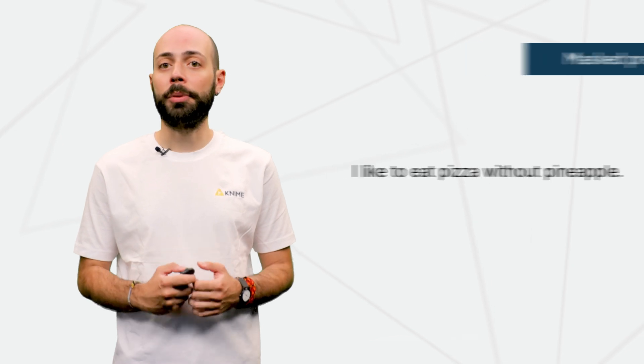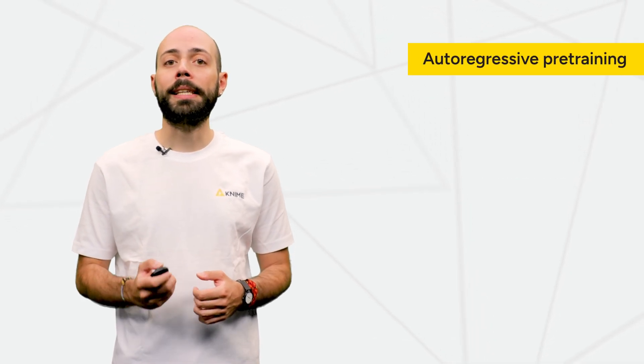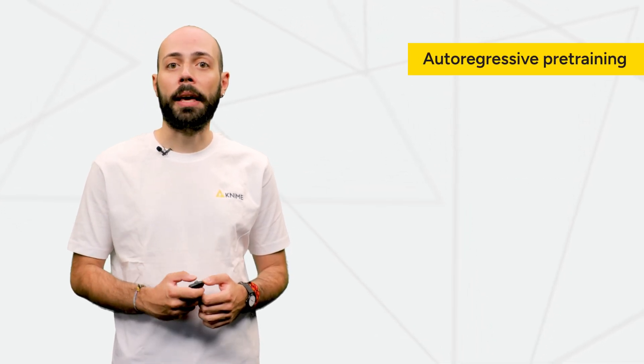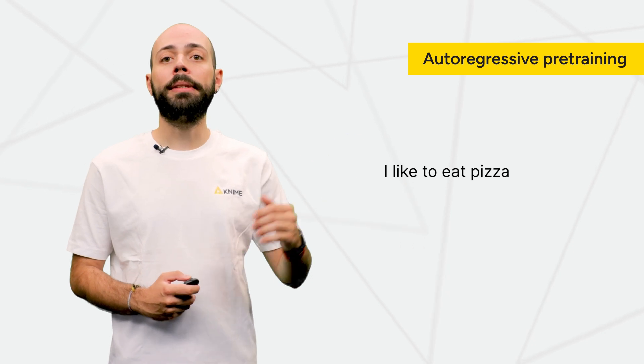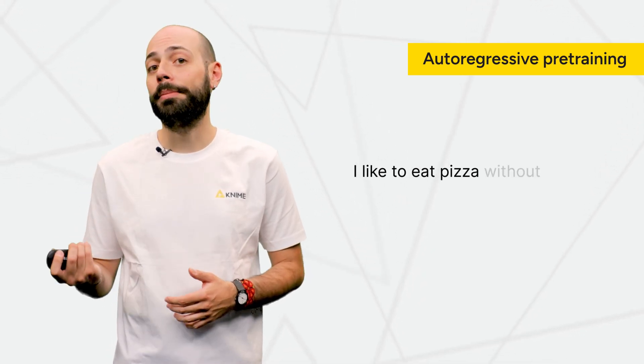In autoregressive pre-training, such as GPT, given a segment of text like this one, the model predicts the next tokens from left to right — for example, 'without' and 'pineapple'. LLMs have demonstrated impressive results on a wide variety of natural language processing tasks, earning them the name of general-purpose models.